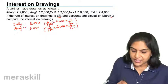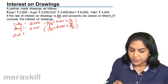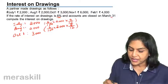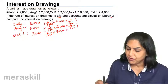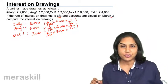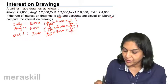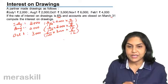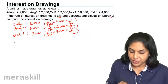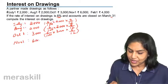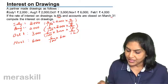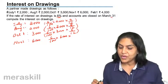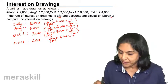After August, let us come to October 1st. The amount withdrawn is 3000. Therefore, 6% of 3000 for — when we talk of October, we are talking of October, November, December, Jan, Feb, and March — therefore we are talking of 6 months. Next, let us come to November 1st. The amount is 6000. Again, 6% of 6000 for — November, December, Jan, Feb, and March — 5 months.